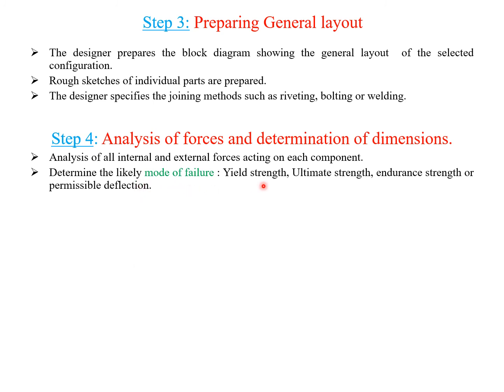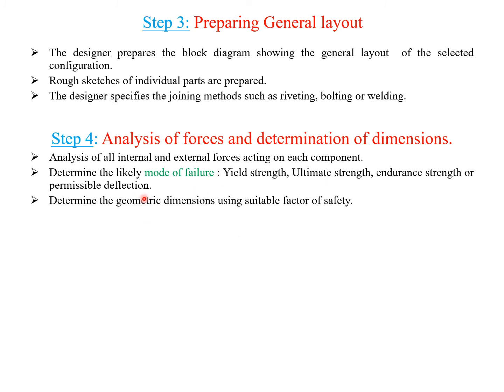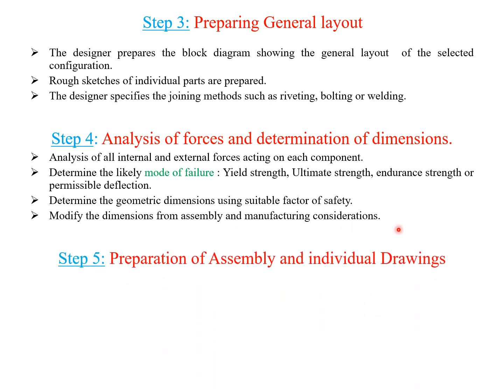Considerations include yield strength, ultimate strength, endurance strength, or permissible deflection. Geometric dimensions are determined using a suitable factor of safety. Dimensions are then modified based on assembly and manufacturing considerations.